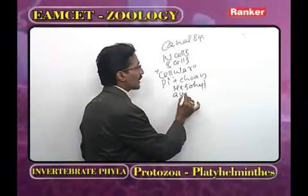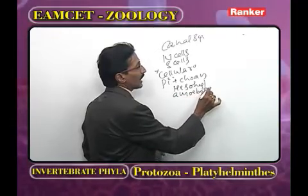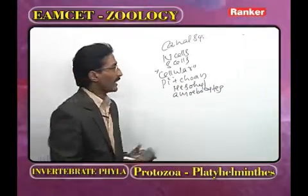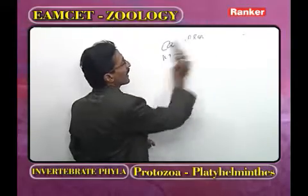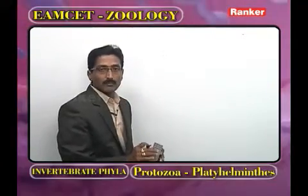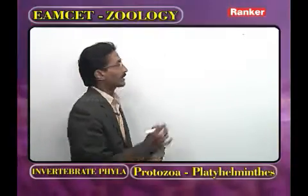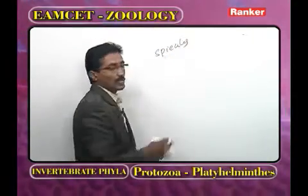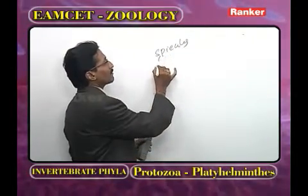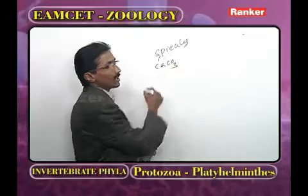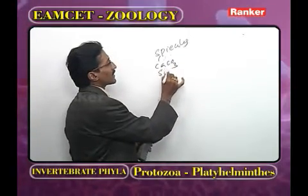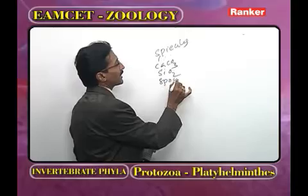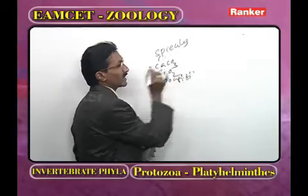In Porifera, the body is supported by an endoskeleton, though it is not a true endoskeleton. The endoskeleton is made by spicules — made of either calcium carbonate, SiO₂, or spongine fibers.